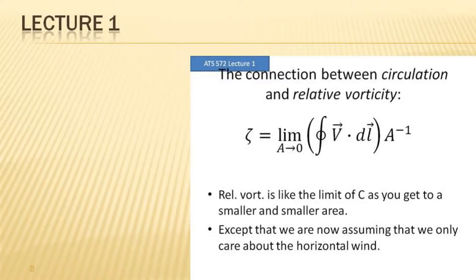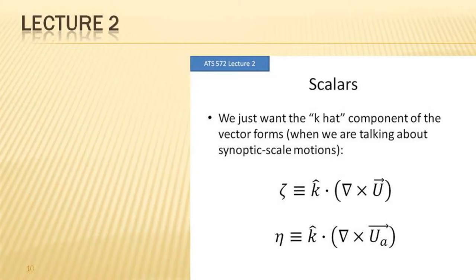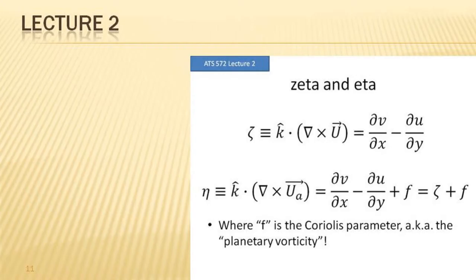There is a connection between relative vorticity and circulation. Circulation applies to an area, but as you make that area smaller and smaller — closer and closer to a point — you get a value closer and closer to the relative vorticity at that point. There was also a vorticity equation, which like the circulation theorem was about the change in vorticity — the rate of change of vorticity. Make sure you understand how we work with vorticity as a scalar in synoptic-scale meteorology, and how we have these different definitions of zeta and eta. You do need to have these definitions memorized.